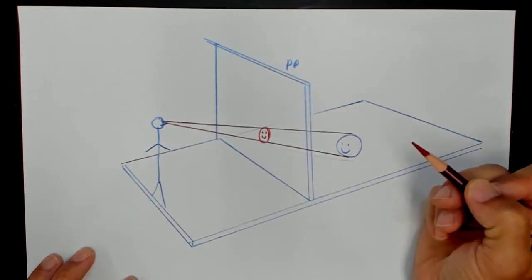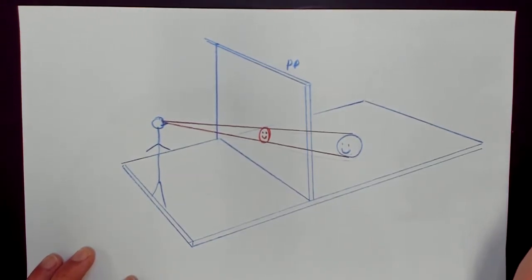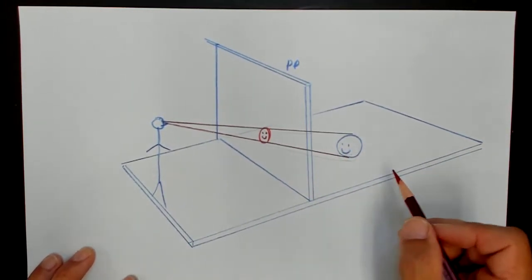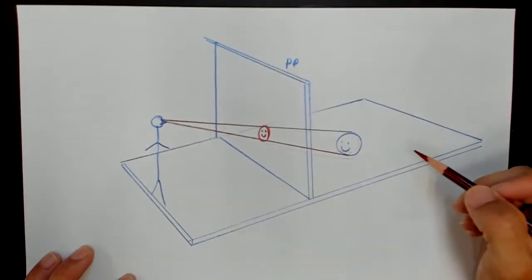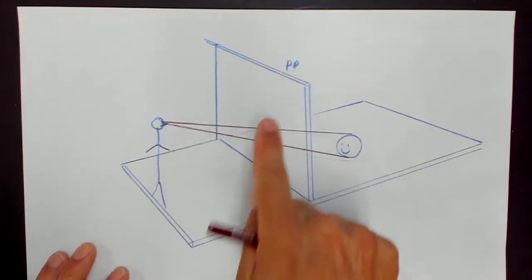At a given distance, so the painting is the intersection of a visual pyramid at a given distance. They're talking about the distance between this viewer and this picture plane. That is the given distance. It's a set distance, how far the viewer is from this picture plane.